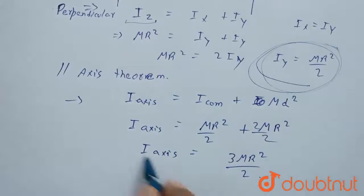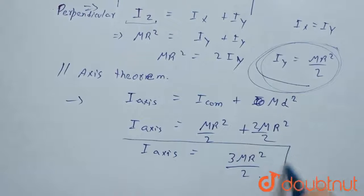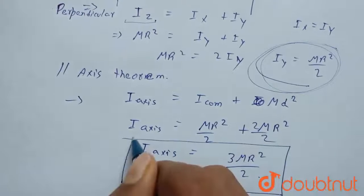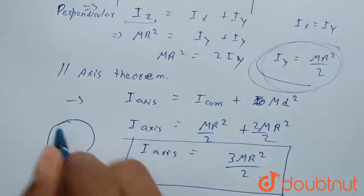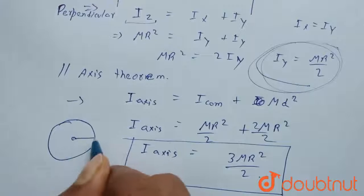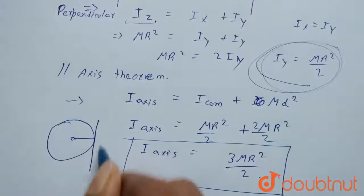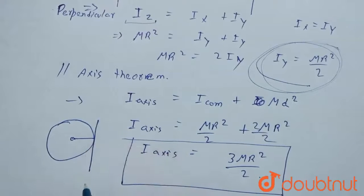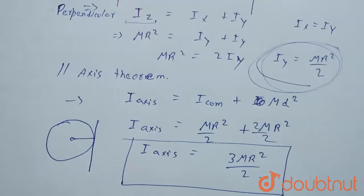So 3MR²/2 is the moment of inertia of a ring about an axis which is tangential to it. Thank you.